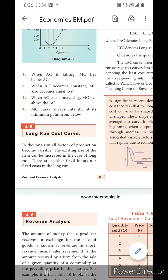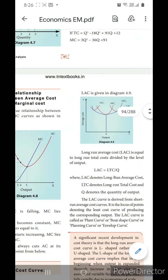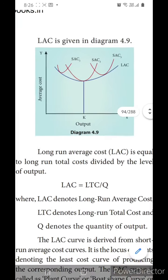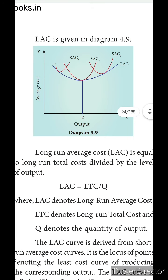Now, for this long run cost curve, they have given a diagram. In this diagram, you may see they have given SAC1, SAC2, SAC3 and so on. What is SAC1? This is the short run cost curve — everything here refers to the short run cost curve.